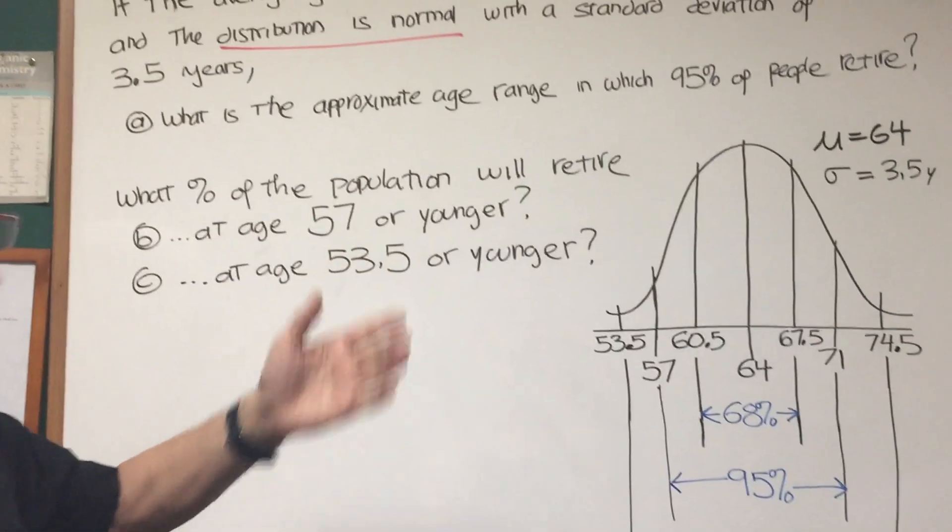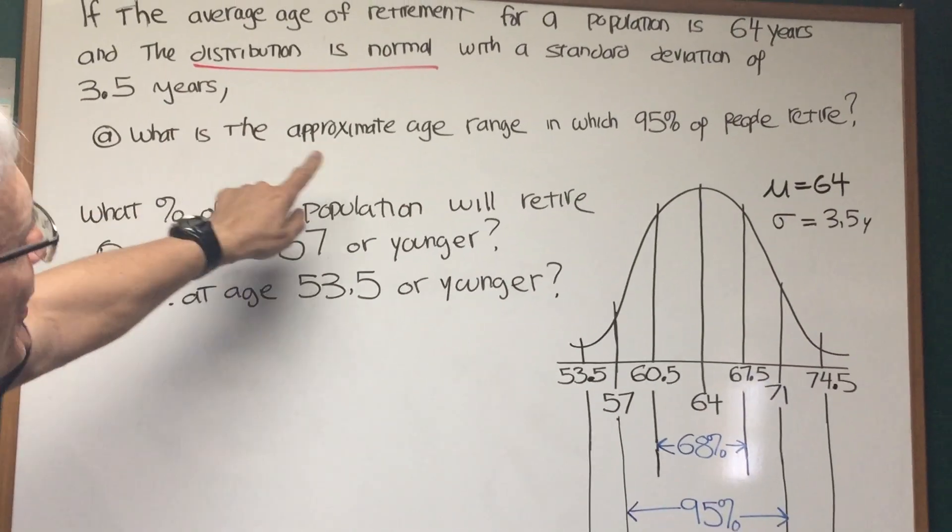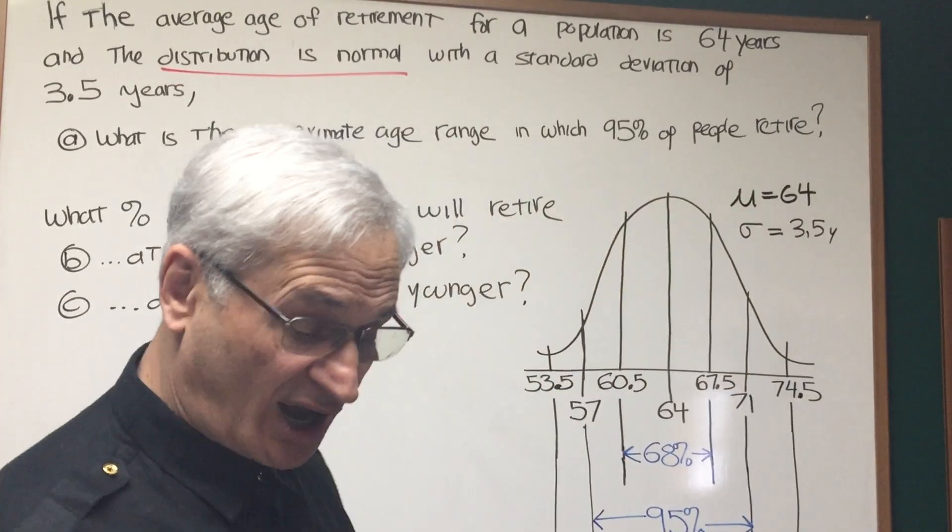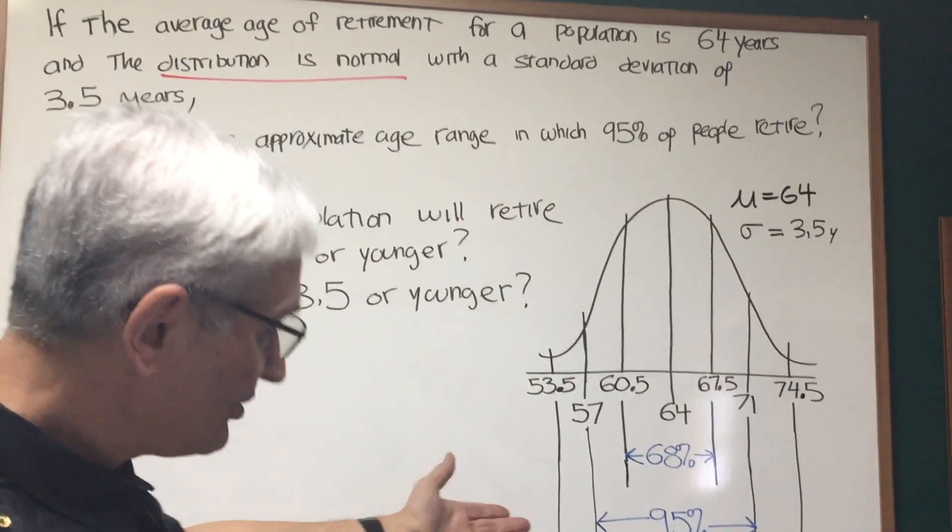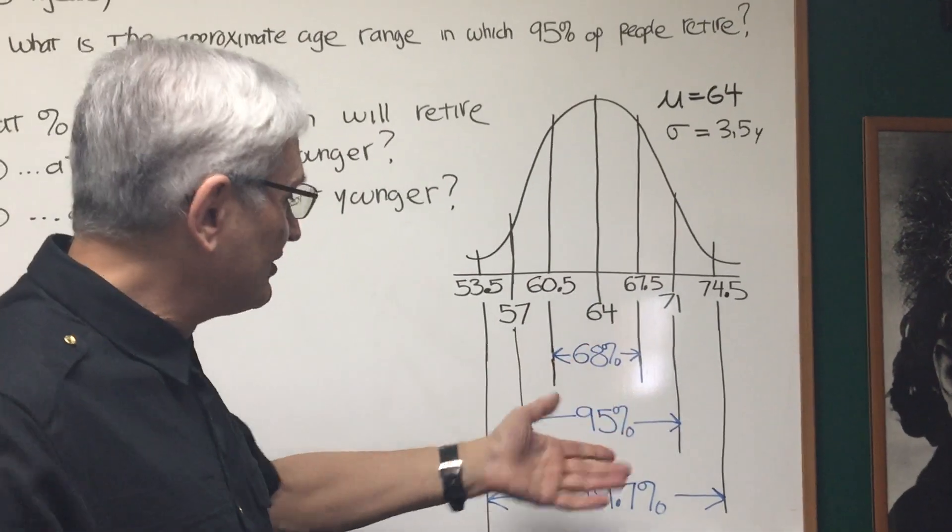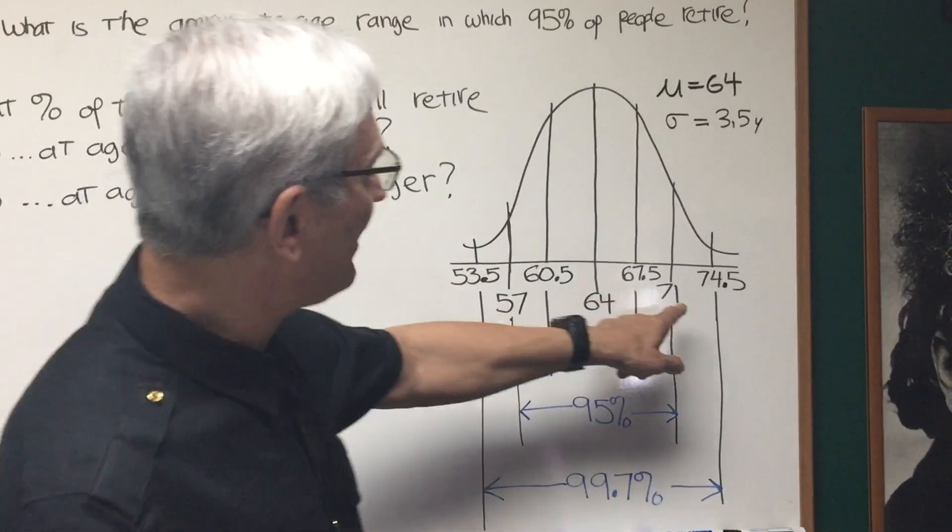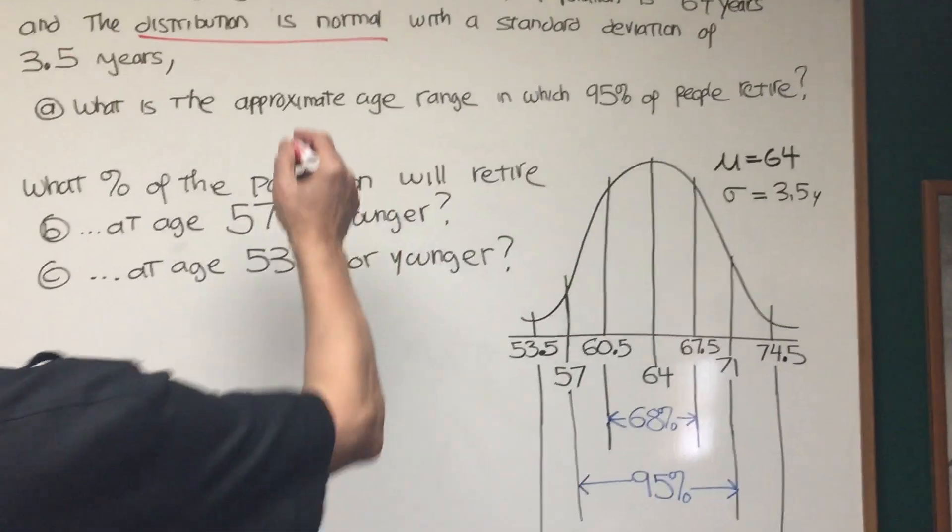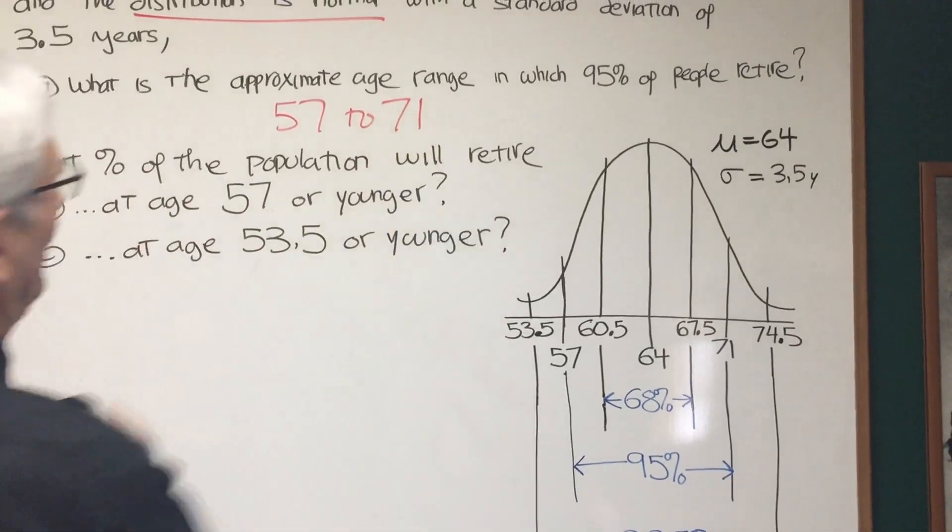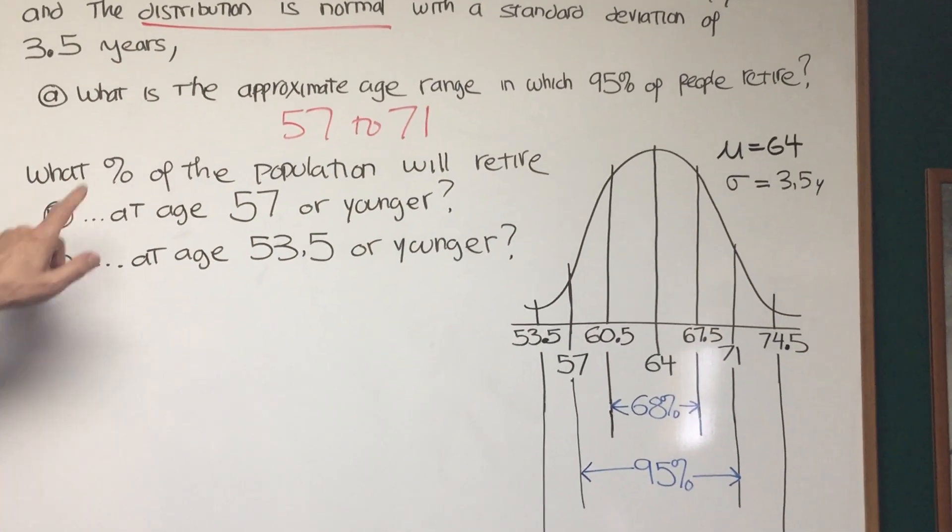Now let's read the question and see if we can answer it based on our labeling here. What is the approximate age range in which 95% of the people retire? Well, that's pretty much readable right from the graph. We can see just from our discussion that 95% of the population falls between 57 and 71. So 57 to 71.